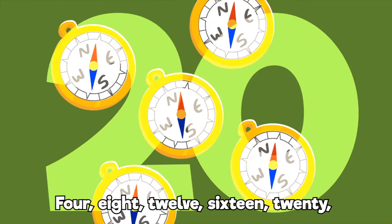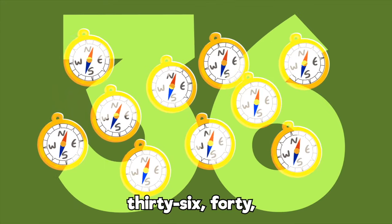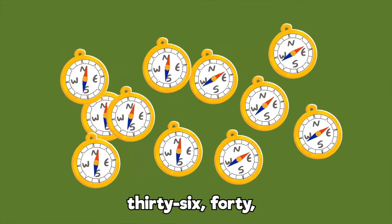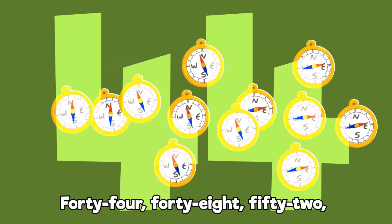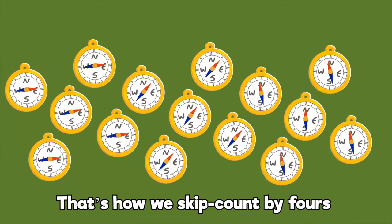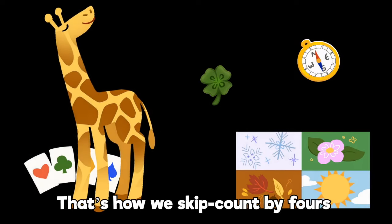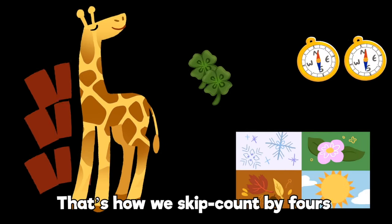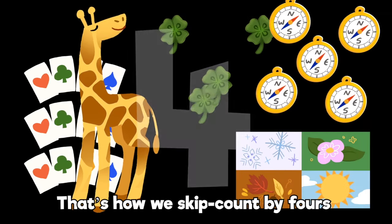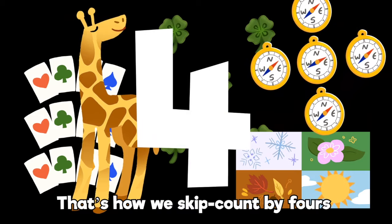4, 8, 12, 16, 20, 24, 28, 32, 36, 40, 44, 48, 52, 56, 60. That's how we skip count by 4s.